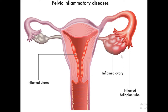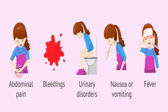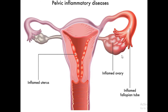The symptoms of PID are very subtle and can be mild, so some women experience no symptoms at all. Some women only notice issues when they have trouble getting pregnant or develop chronic pelvic pain. Other symptoms include heavy vaginal discharge with an unpleasant odor, abnormal uterine bleeding when not menstruating, pain during intercourse, fevers with chills, and painful, frequent, or difficult urination.